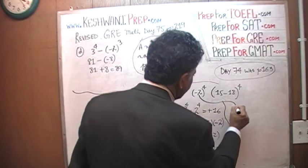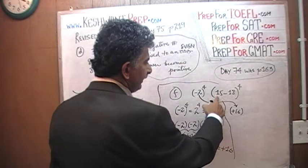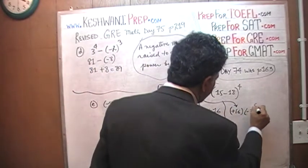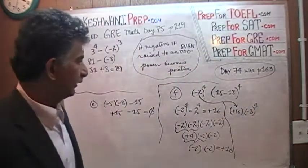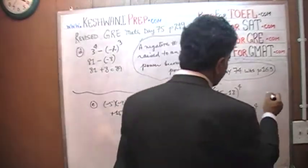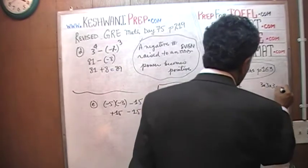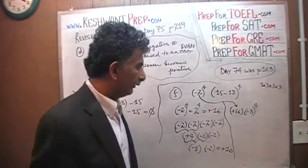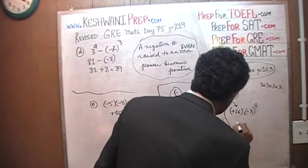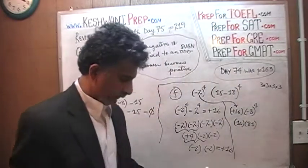So this part right here is positive 16. Now 15 minus 18 is negative 3. Negative 3 raised to 4 is the same as 3 raised to 4. And 3 raised to 4 we just saw: 3 times 3 is 9, 9 times 3 is 27, and 27 times 3 is 81. So that's positive 81. So it's 16 times 81.